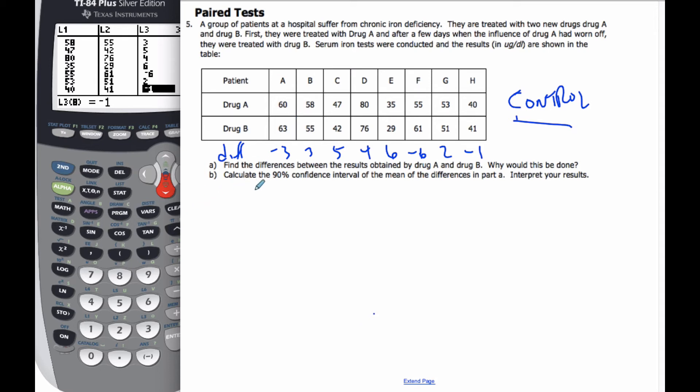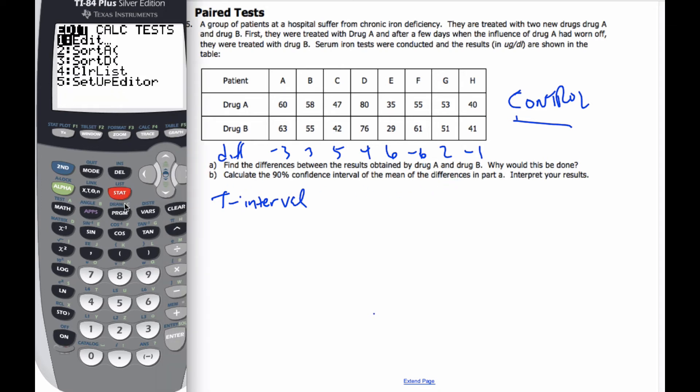And so part B says, I'll find the confidence interval. I'm naming my interval a T interval, as opposed to a Z interval. And I'm going to do it on the difference in part A. Okay, so I'm going to do a 90% confidence interval, I'm going to go to my test, T interval, and I'm going to use data.